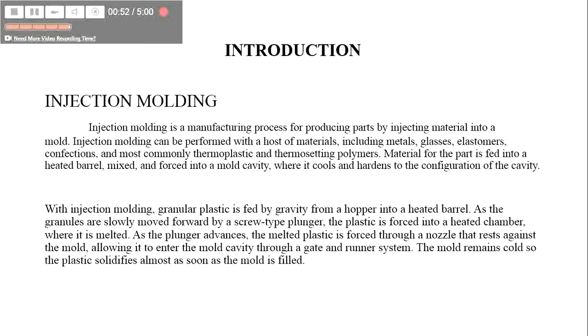In injection molding, granular plastic is fed by gravity from a hopper into a heated barrel. As the granules are slowly moved forward, the plunger is moved and the melted plastic is forced into a nozzle that rests against the mold. The mold is cold and solidified.